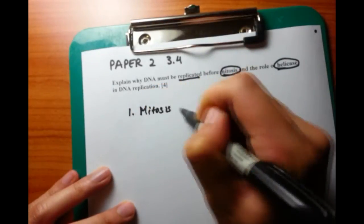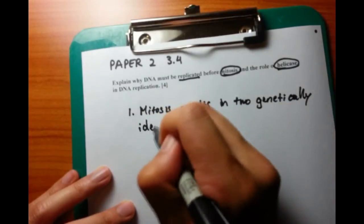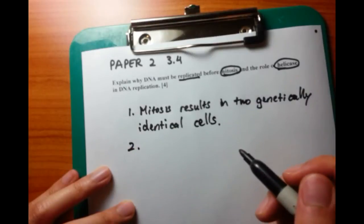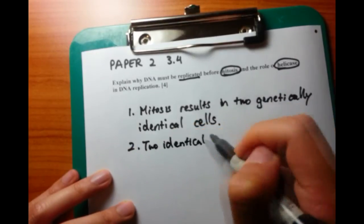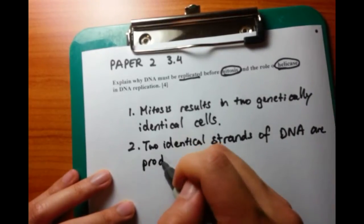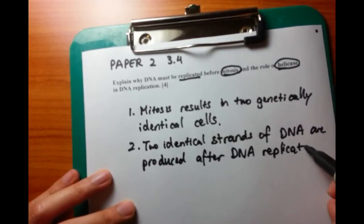So the first thing that we want to do is define what mitosis is. Well, what it does is that it is cell division and it results in two genetically identical cells. That's very important. And because of this, because these cells are identical, the DNA information in there must be identical as well. So two identical strands of DNA are produced after DNA replication.